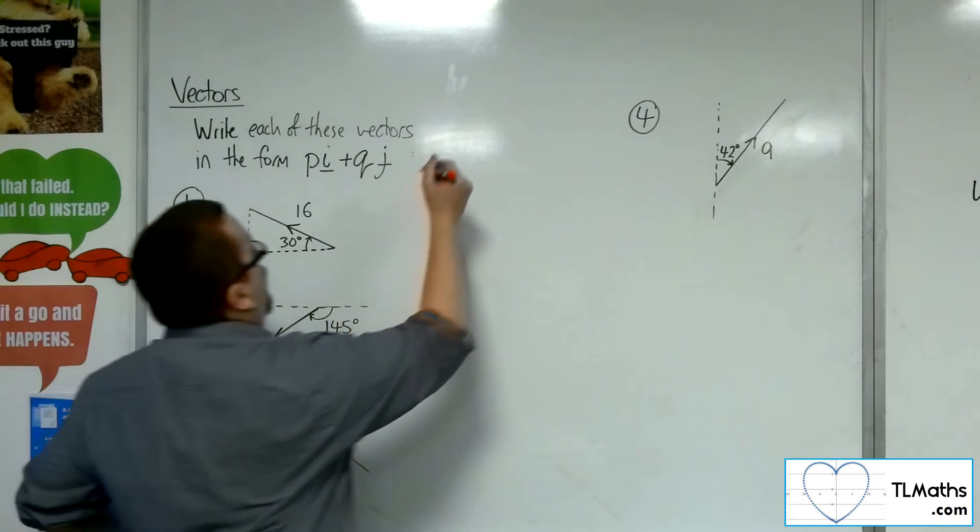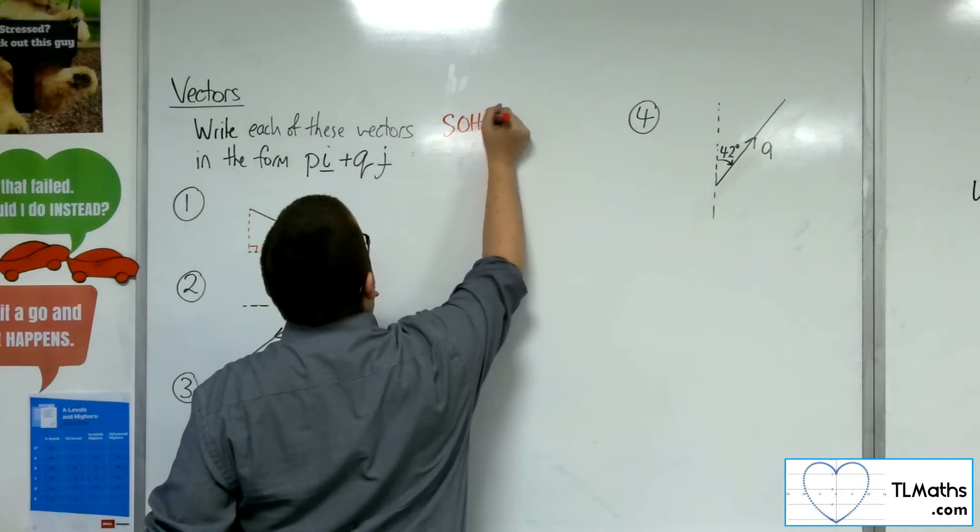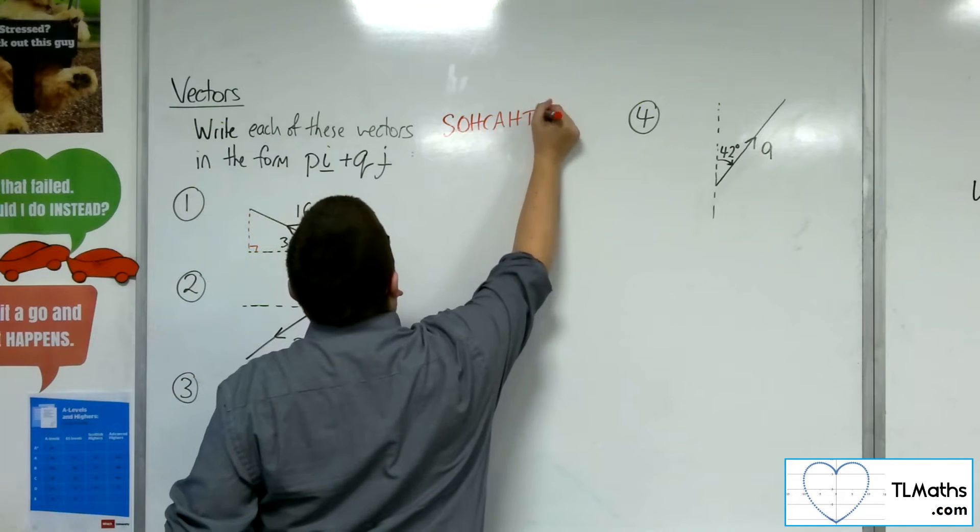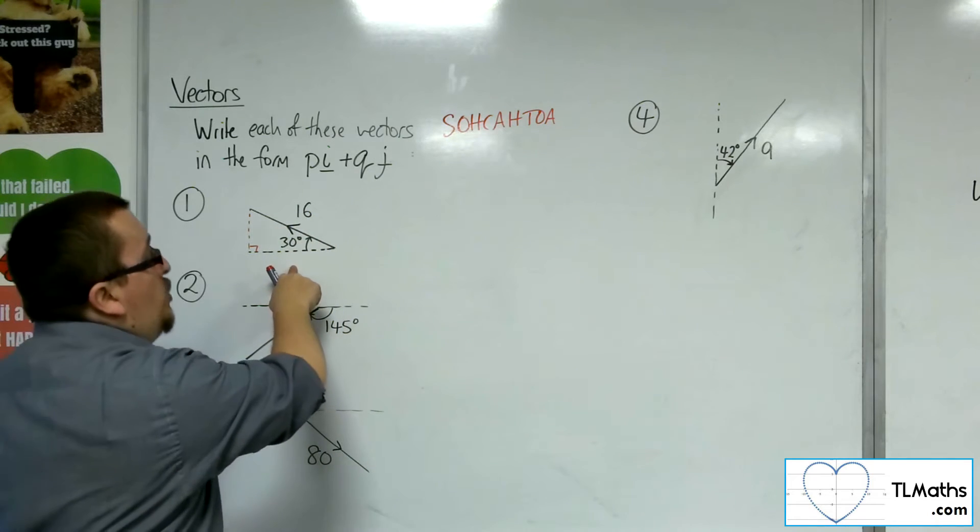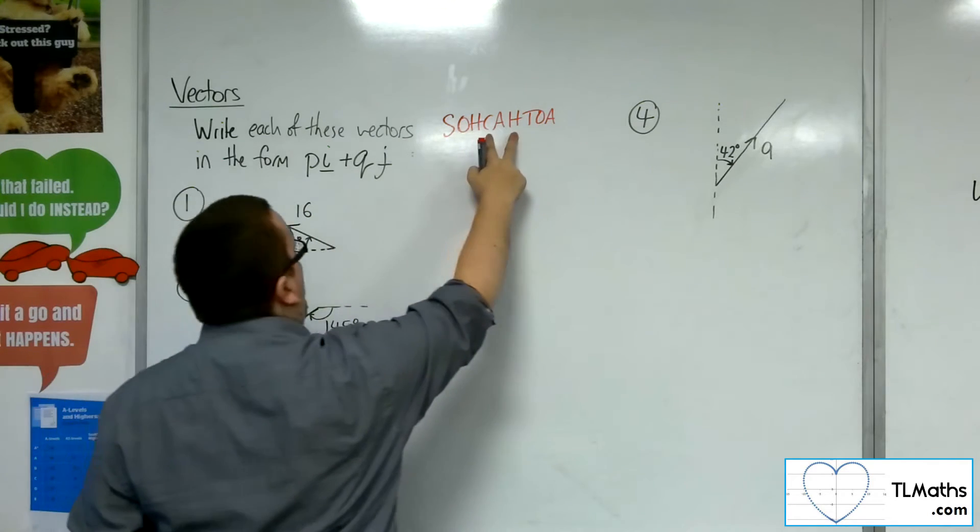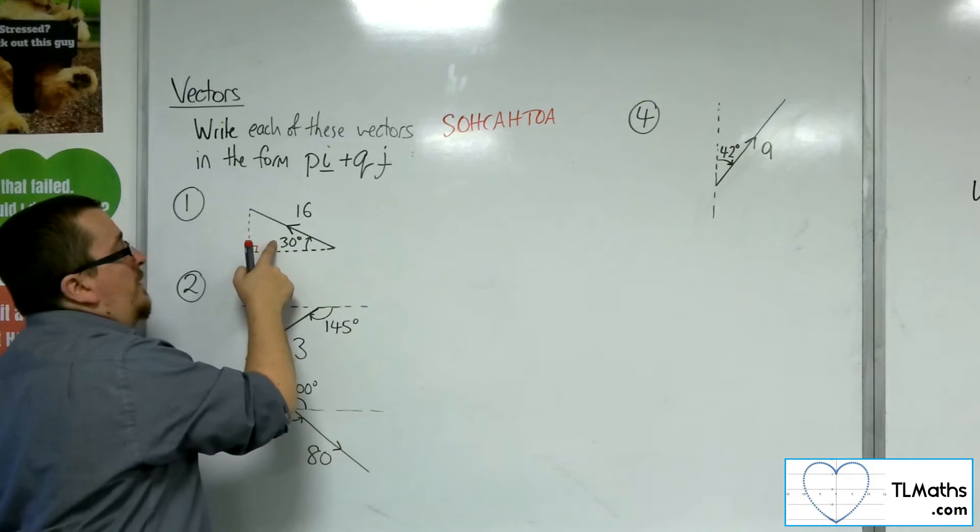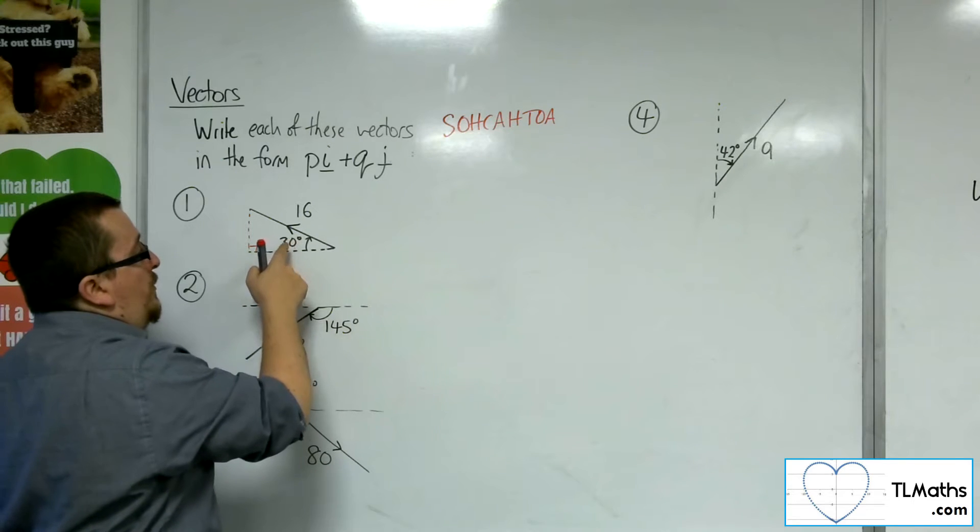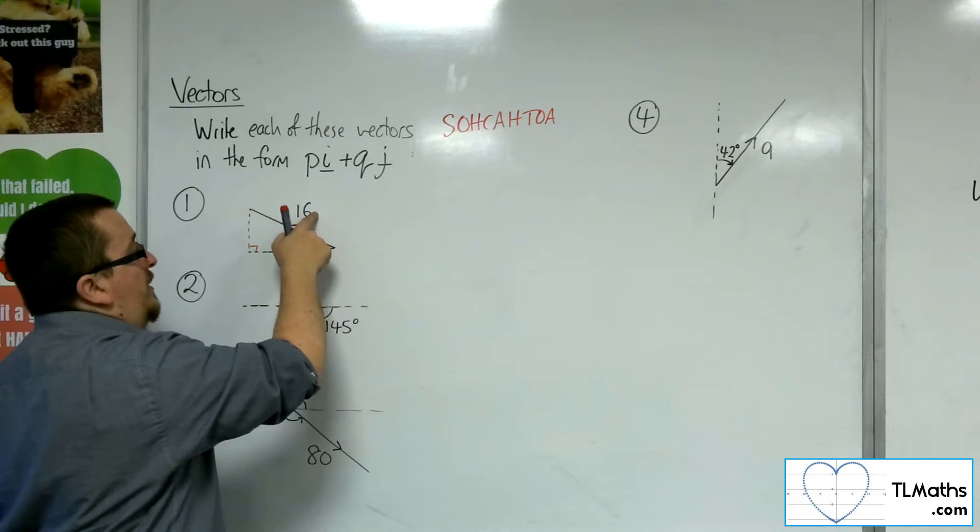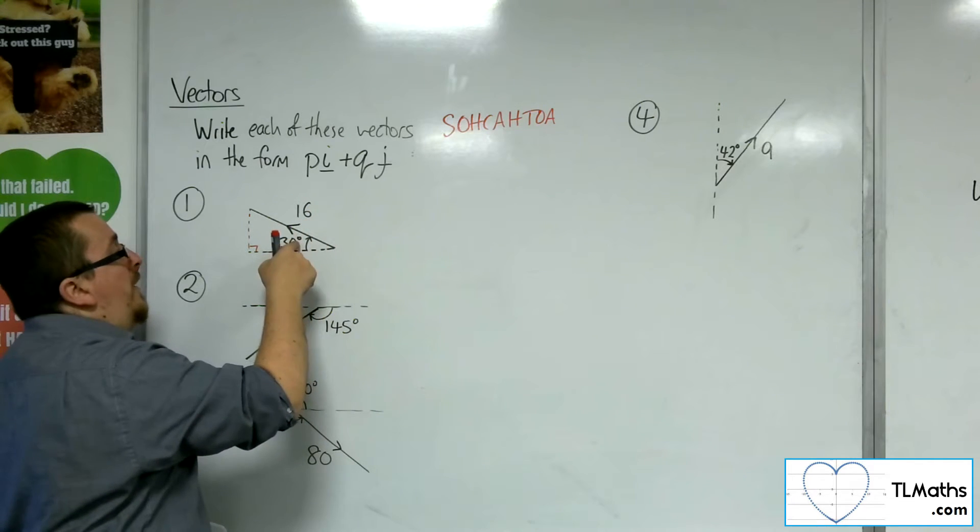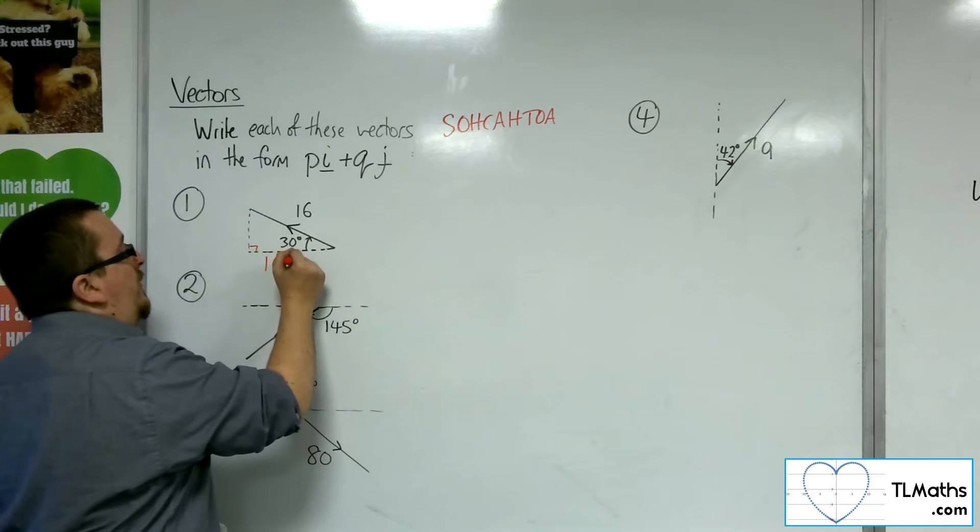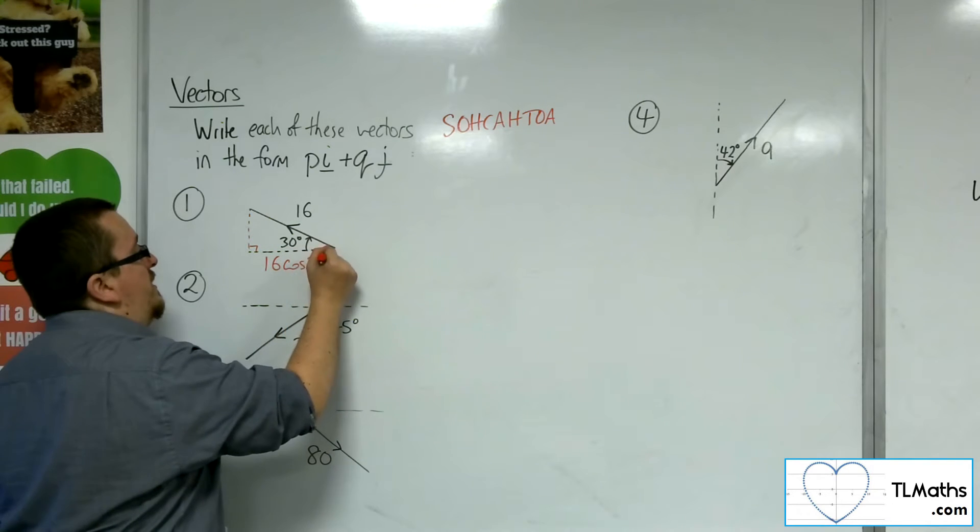So I know that from SOHCAHTOA, so let's write that down, that if I've got the angle and I've got the hypotenuse and I want the adjacent, then I'll be looking at cosine. So cosine of the angle is equal to the adjacent divided by the hypotenuse.